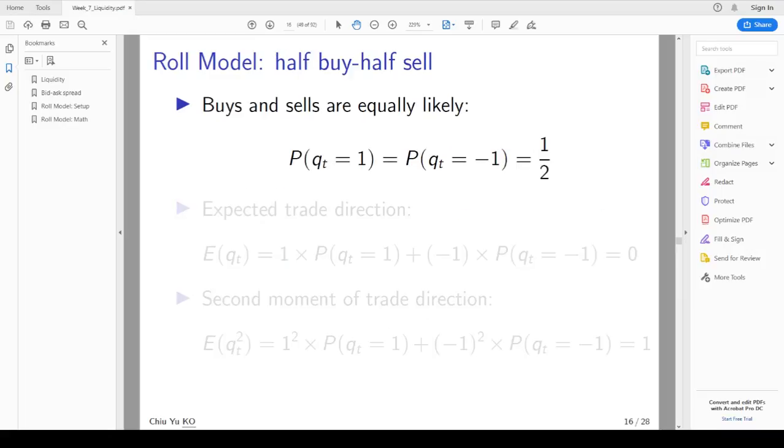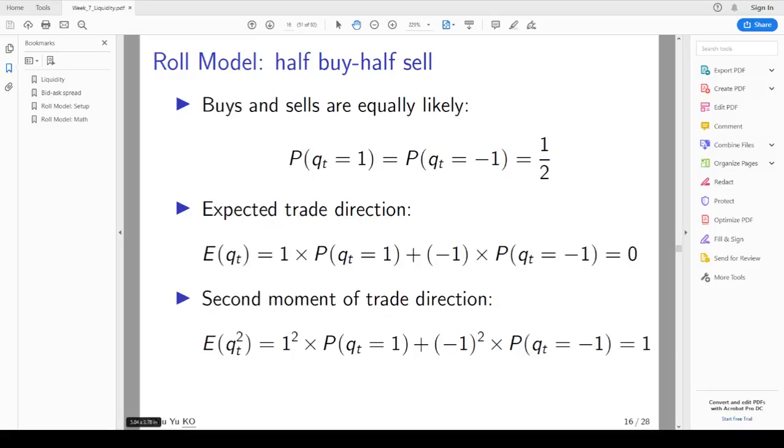The first thing we want to assume is Q_t, where the assumption is buys and sells are equally likely. So Q_t is equally likely to be equal to 1 or -1. What does that mean? This means that expected value of Q_t is equal to 0. Expected value is equal to 1 times probability of equal to 1 and -1 times probability of -1, which is 0. And the second moment is expected value of Q_t squared equals 1. The calculation is straightforward.